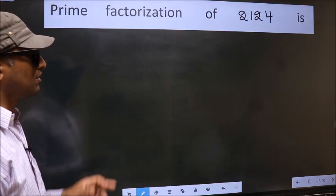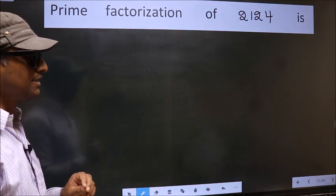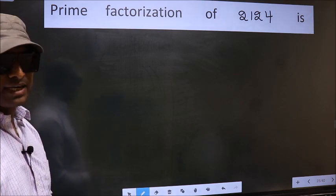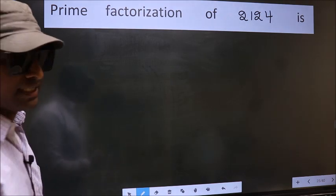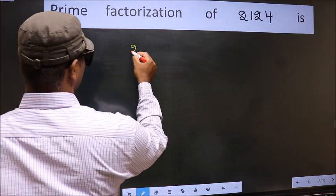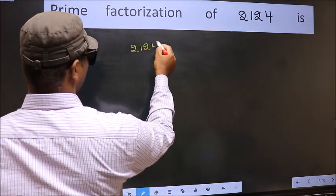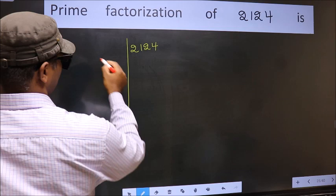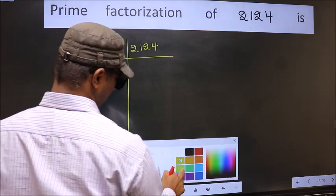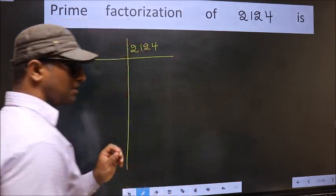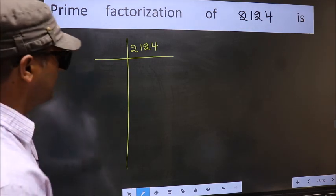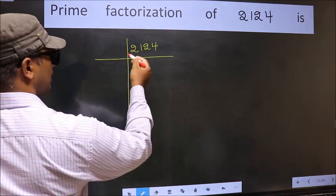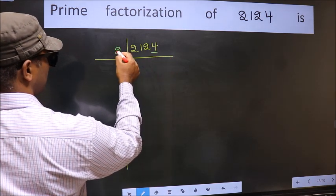Prime factorization of 2124: To do prime factorization, first we should frame it in this way. 2124, this is your step 1. Next, in this number, the last digit 4 is even, so take 2.